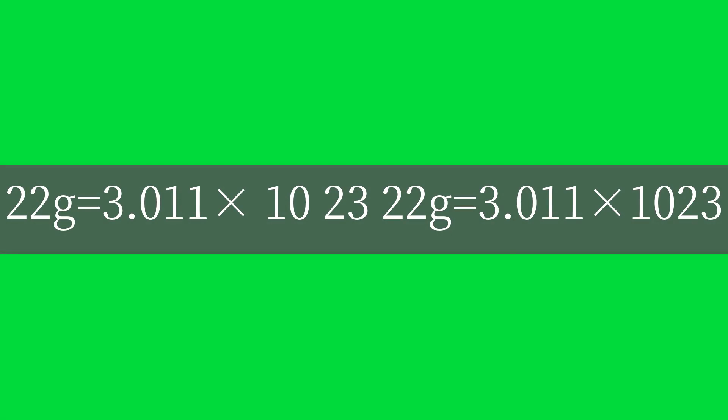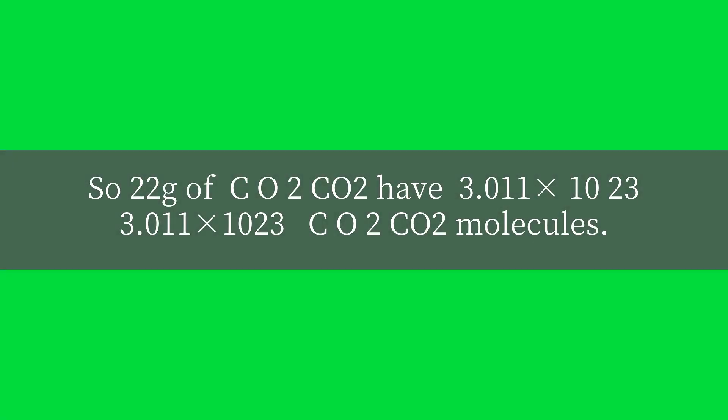22 g equals 3.011 times 10²³. So 22 g of CO2 have 3.011 times 10²³ CO2 molecules.